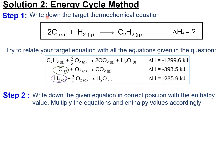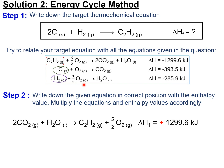Now, how do you solve Hess Law using the second method — the energy cycle method? Step 1 and step 2 are the same: write down your target thermochemical equation, then relate it with all the equations given in the question. Identify the position of your reactants and products. In this case, you need to reverse the first chemical equation so that C2H2 appears on the product side.